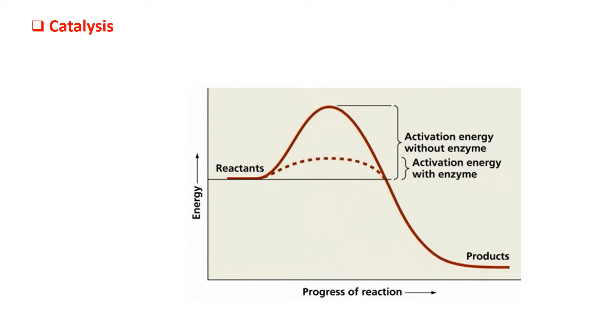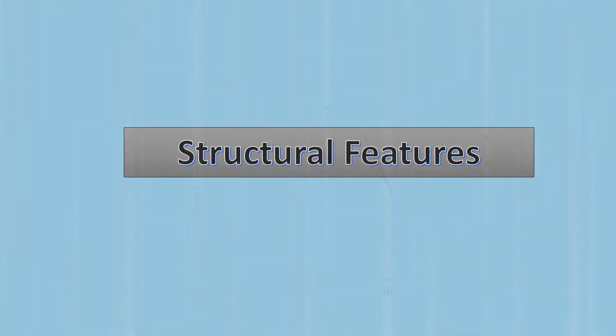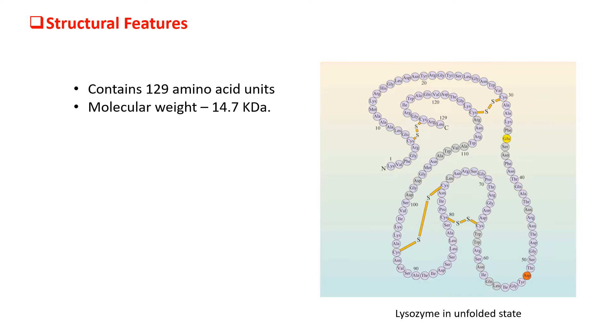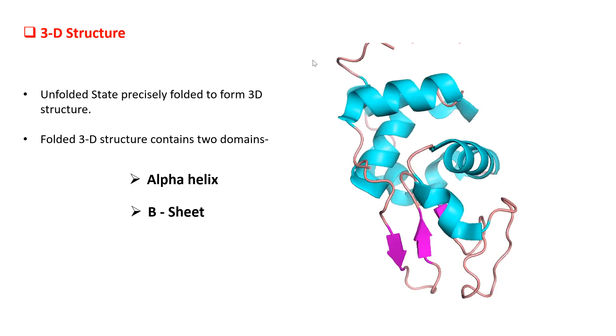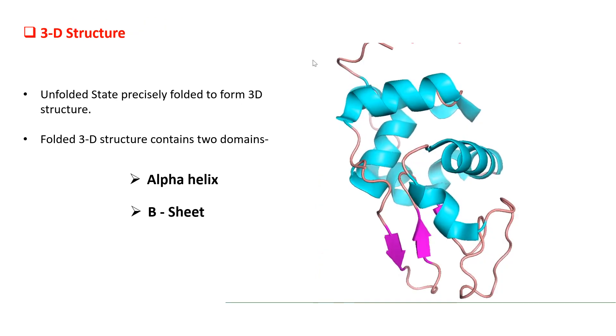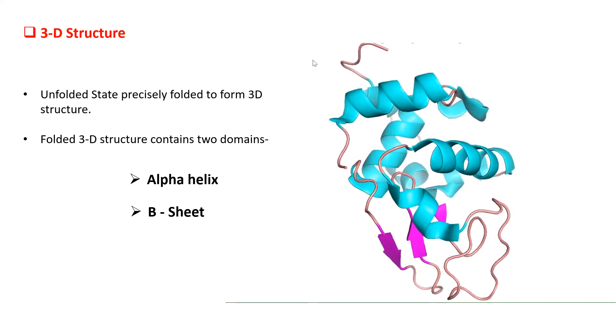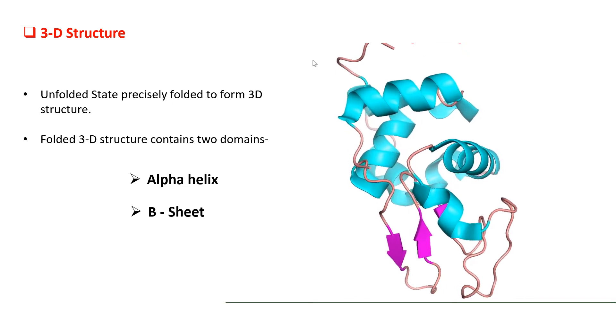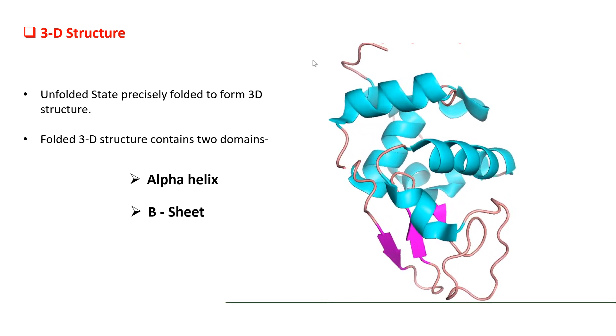Like all other catalysts, lysozyme decreases the activation barrier so that the reaction can happen easily and the speed of reaction increases. You can see in this image lysozyme in its unfolded state which contains 129 amino acid units with a molecular weight of 14.7 kD. This unfolded state further forms a 3D structure which has two domains: alpha helix and beta sheet. The sky blue color represents the alpha helix and purple color represents the beta sheet.